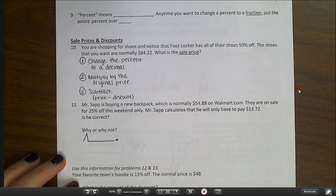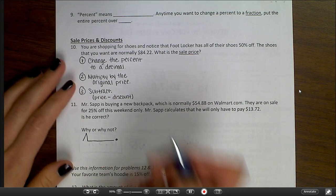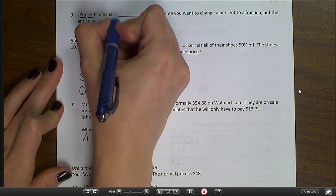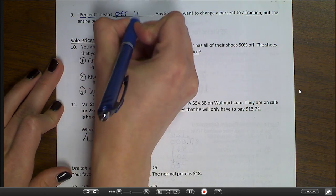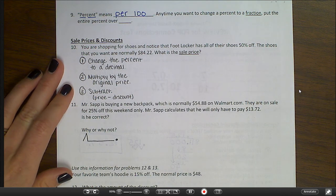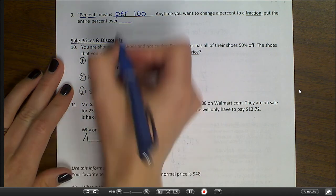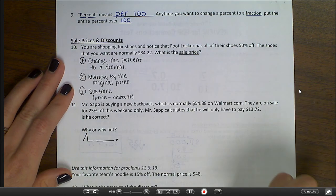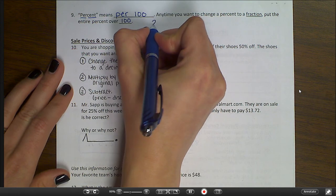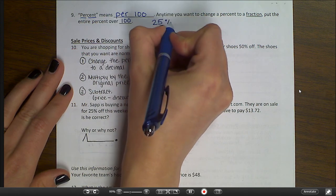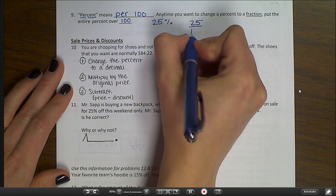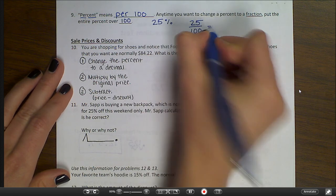Let's look at number nine. Percent means per 100. Cent means 100. So percent means per 100. So any time you want to change a percent to a fraction, just put the entire percent over 100. For example, if I wanted to change 25 percent into a fraction, I would just write 25 over 100, and then I can simplify.